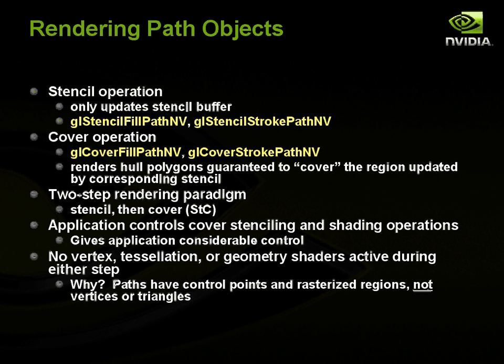One thing to note is there's no vertex, tessellation, or geometry shaders active during either step. Paths are described through a series of control points and really represent rasterized regions — there aren't vertices or triangles the way you have in a mesh with conventional 3D rendering. It makes sense that the kind of transformation you're doing is a linear projective transformation, not something arbitrarily specified with a shader. At the fragment level, you still get to use your shader.